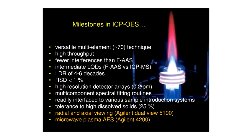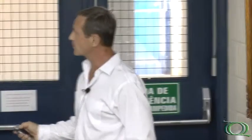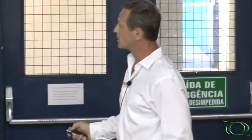Today it's based on high-resolution spectrometers, much like those used for continuum source atomic absorption. It's readily interfaced to various sample introduction systems. The most recent development, since it's been around since 1974, has been the introduction by Agilent of both radial and axial views simultaneously achievable.